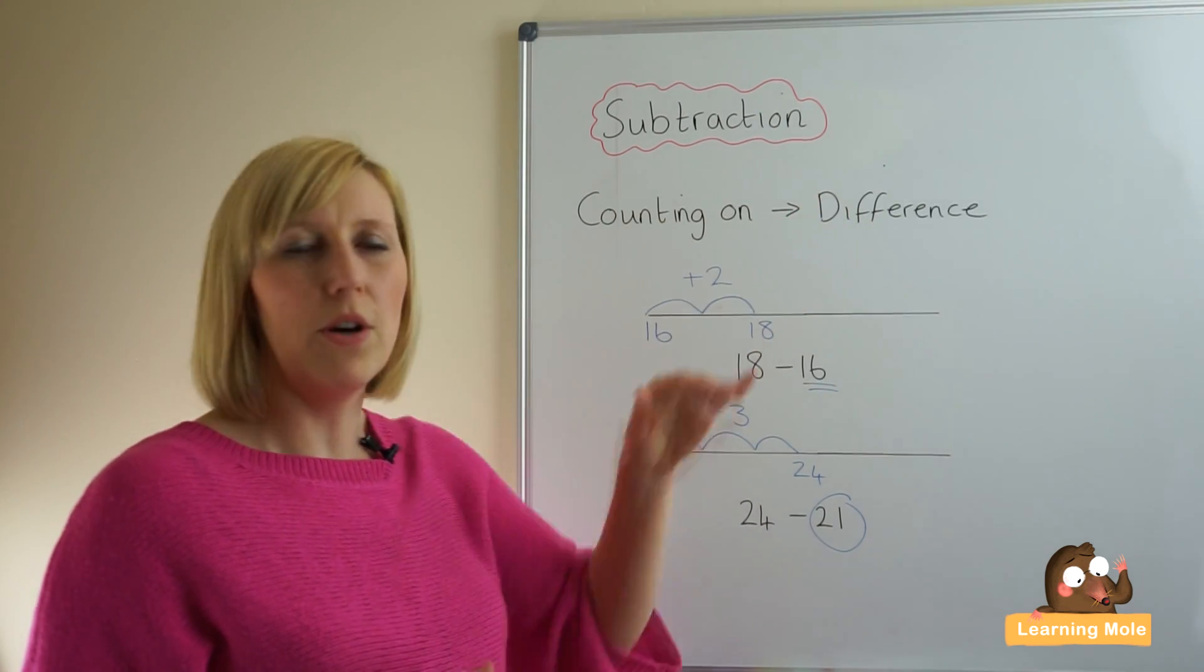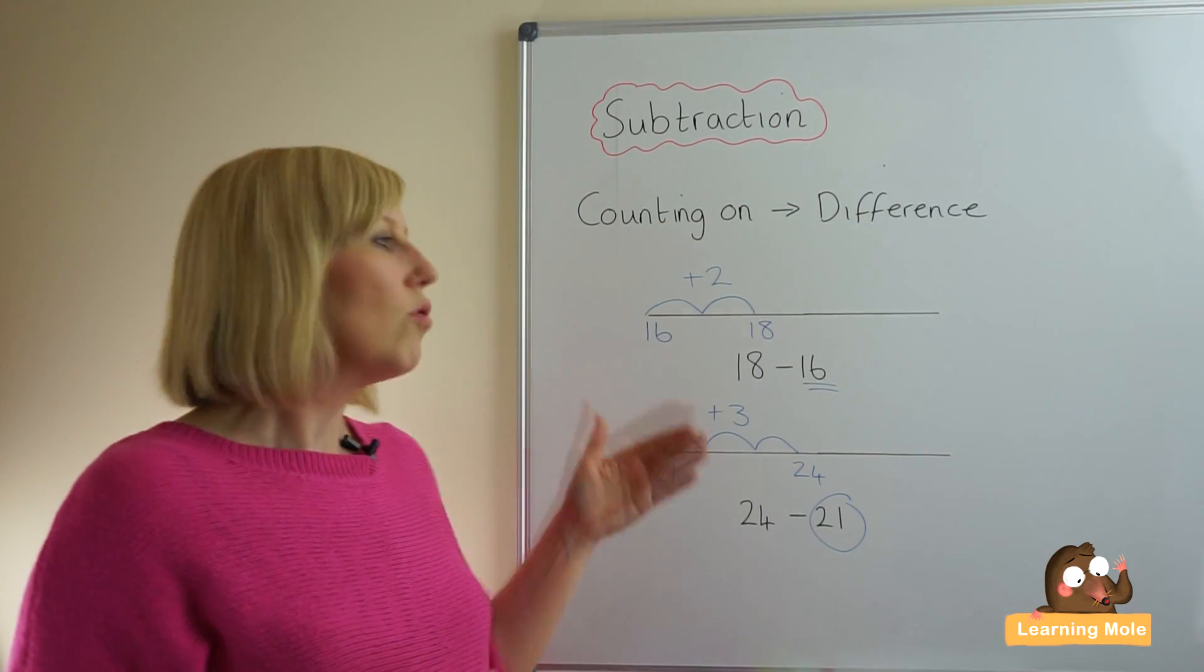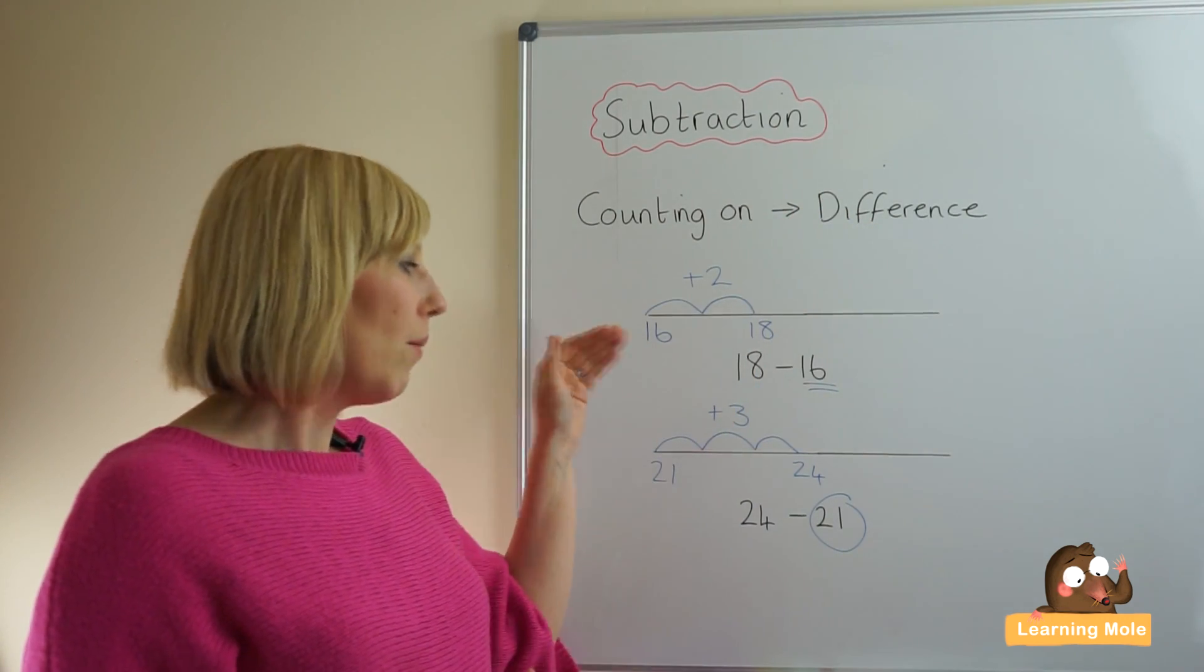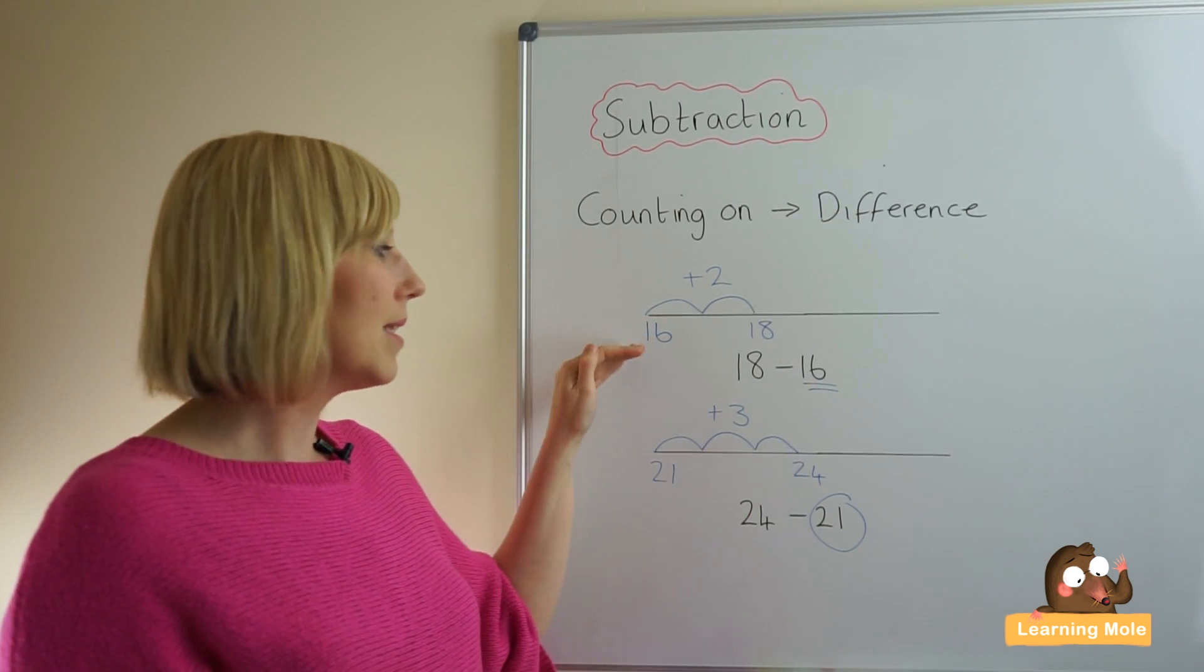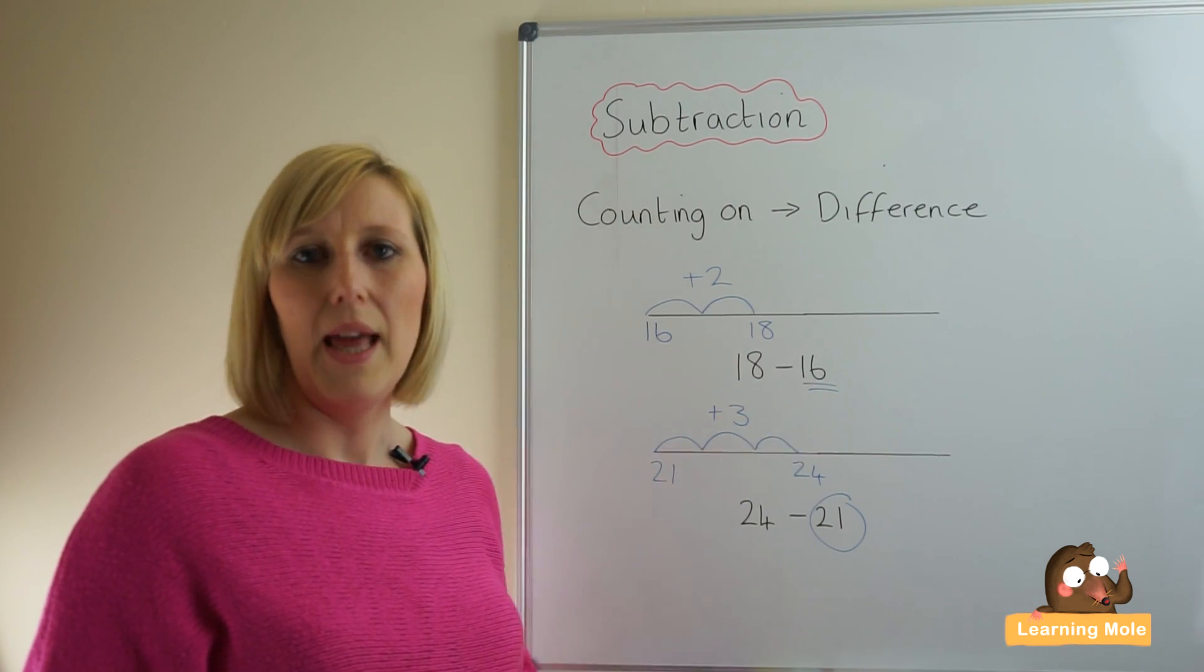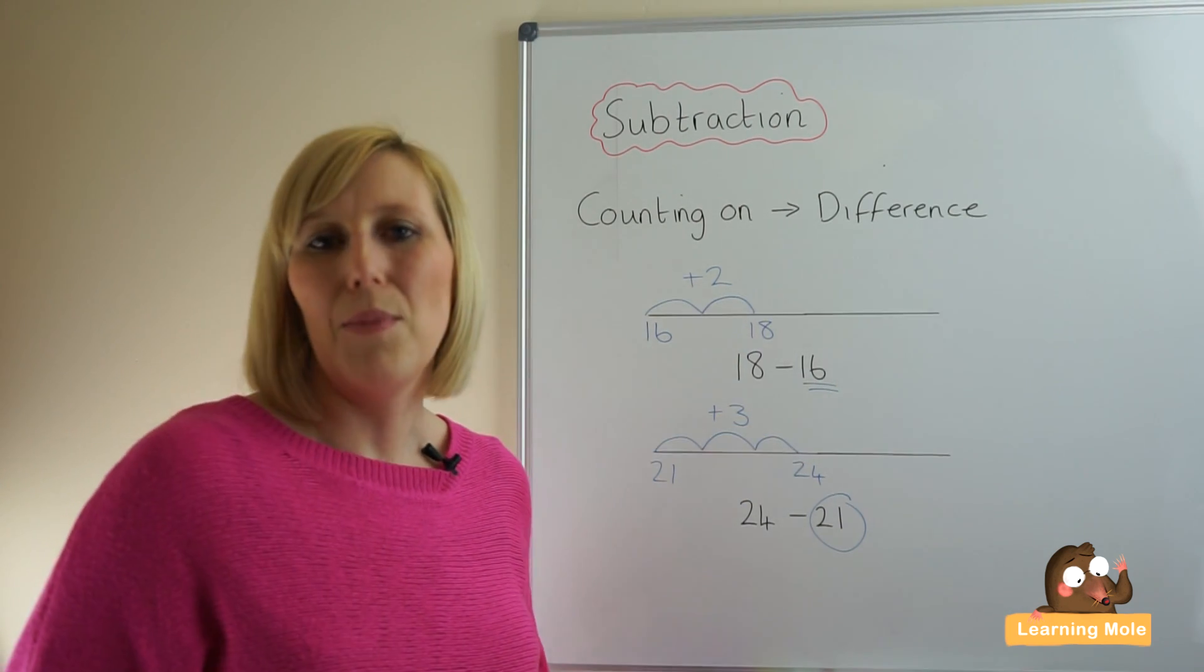So just to recap, remember that we're using this strategy when two numbers are very close together. We're counting on from the smallest number to the biggest number and in as few steps as we possibly can.